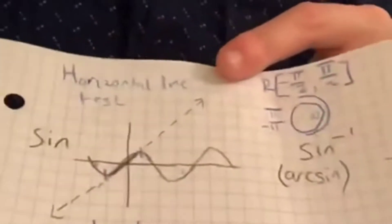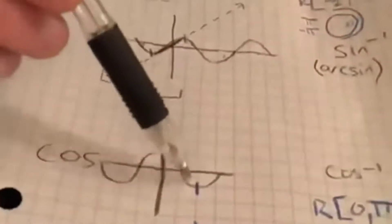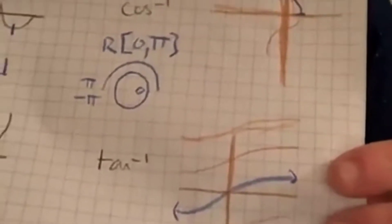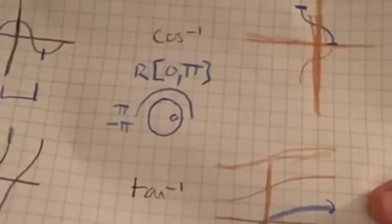So looking at the original functions, we chose a part of each that passes the horizontal line test, and as functions they all pass the vertical line test. When we invert them, the blue sections shown are the inverses of sine, cosine, and tangent respectively. Because we chose a part of the original function that passed both the horizontal and vertical line tests, when we invert it, it still passes both. And again, there was that loss of information when you ran sine.